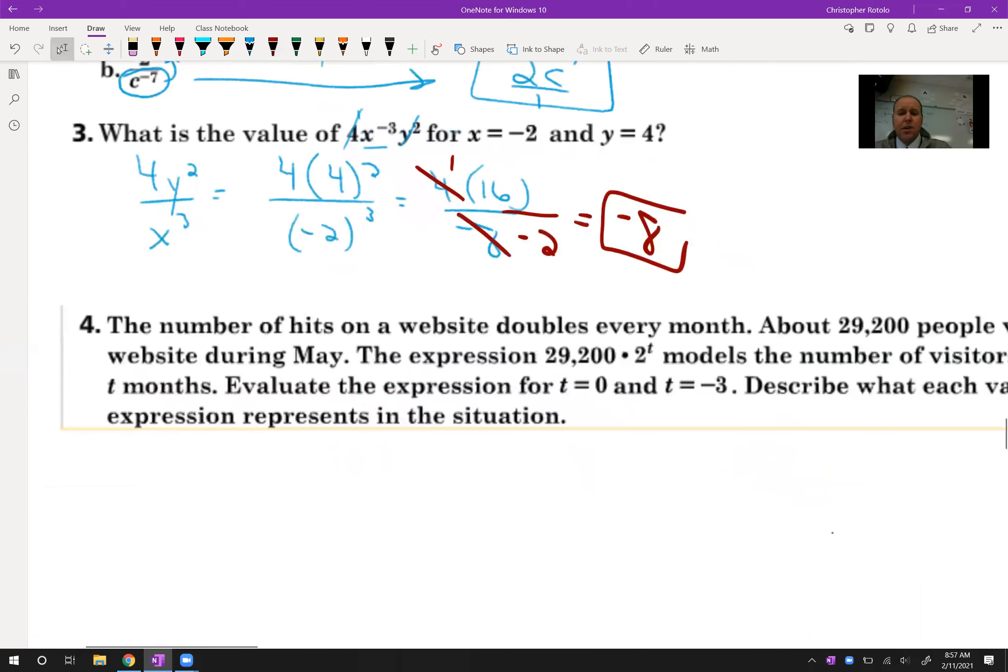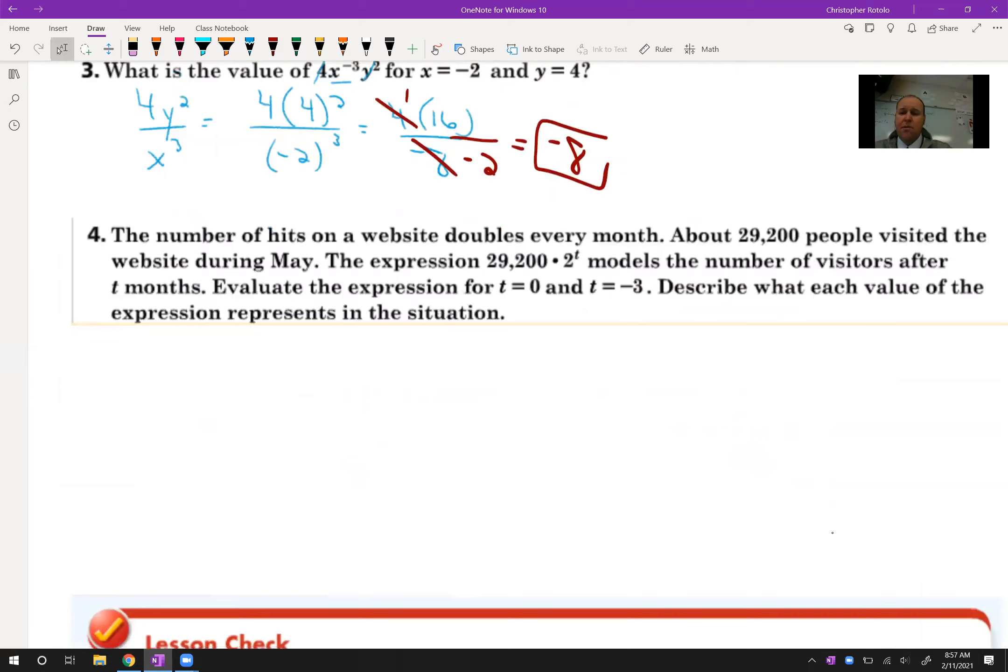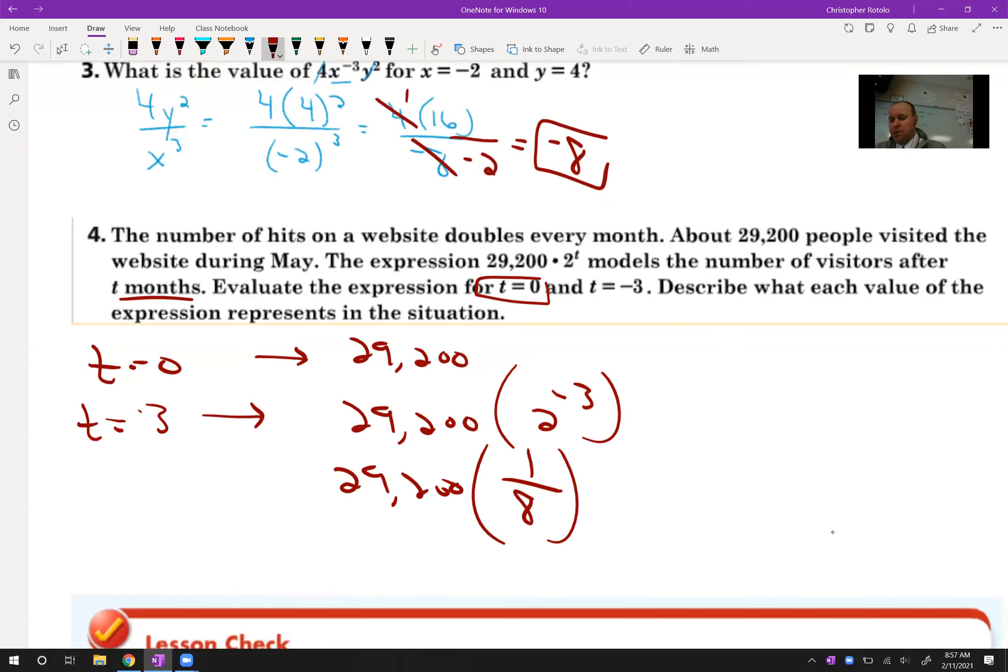Alright, so we have another one of these. We're trying to deal with a number of website visitors every month. So we have 29,200. Again, we want to plug in 0. So hopefully you get the idea. If I plug in 0, I'm going to get just 29,200, because 2 to the 0 is going to be 1. Now, what about t to the negative 3rd? So that's 29,200. So this is 3 months ago. T is months. So at 2 to the negative 3rd, 29,200, and this is going to become 1 over 8. So we're going to take 29,200 and divide it by 8. Three months ago, this website only had 3,650 visitors. So they're definitely doing something to catch wind of, you know, get some traffic there.